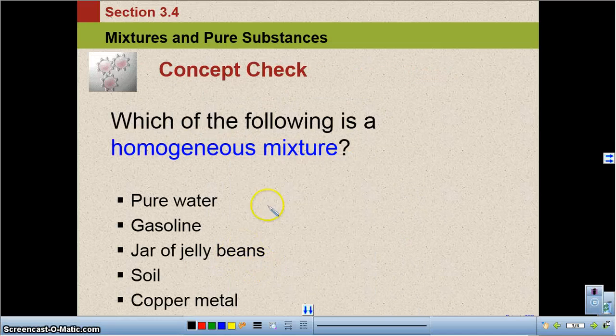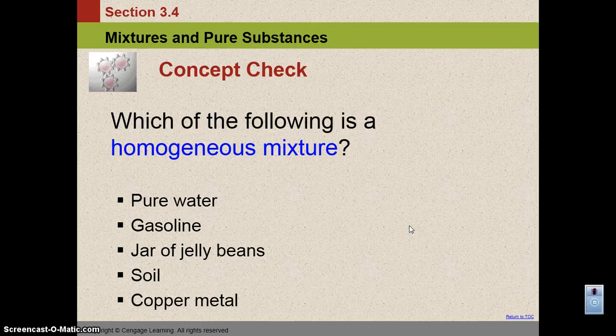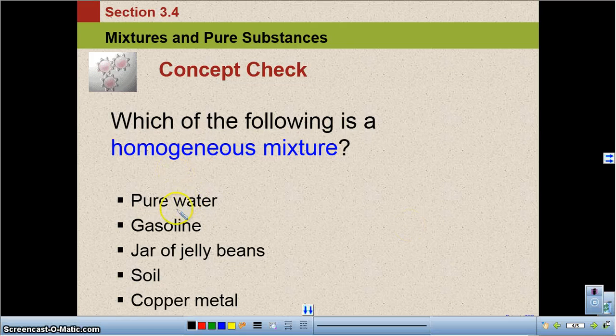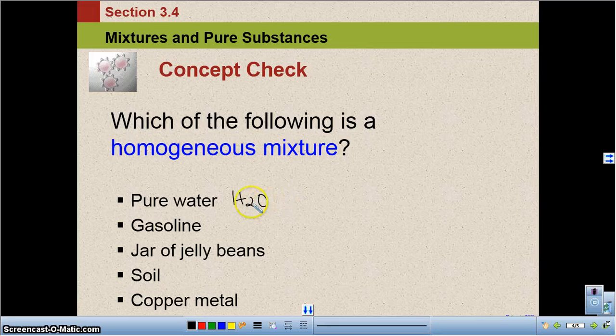Okay, let's take a look at this concept check. The concept check asks, which of the following is a homogeneous mixture? So remember that homogeneous means the same throughout. So let's just take a look at each one of these. Pure water. We know that pure water is H2O. It's written as a compound. It's made up of elements. And we know that it's the same no matter where we're at in the world. This is a compound.